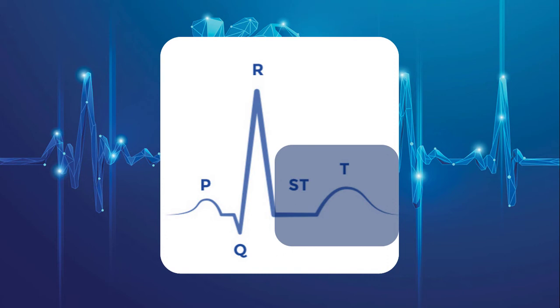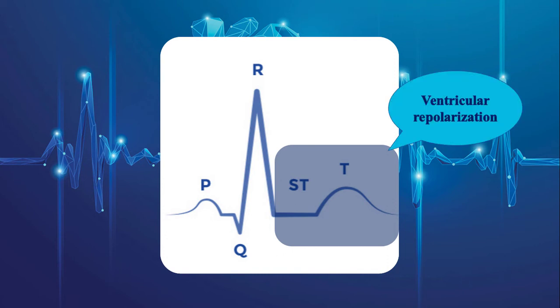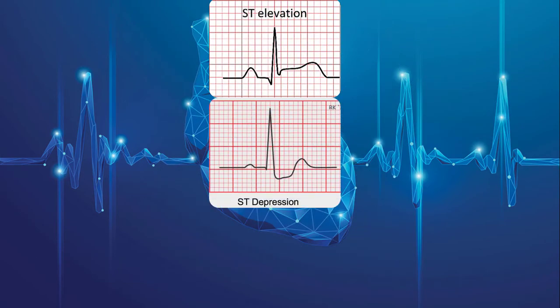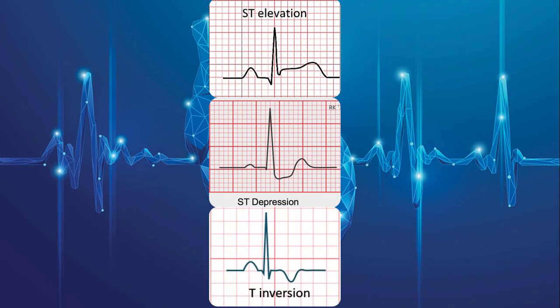ST-segment and T-wave represent ventricular repolarization. Main abnormalities of ST-segment and T-wave include ST-elevation, ST-depression, and T-wave inversion.